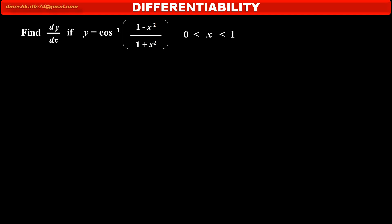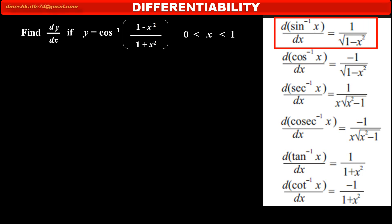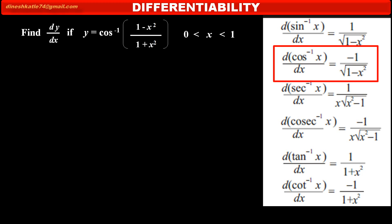To find the derivative of an inverse trigonometric function, first we have to learn these formulae. The first one is: derivative of sin inverse x is equal to 1 upon square root of (1 minus x square). The second one is: derivative of cos inverse x is equal to minus 1 upon square root of (1 minus x square).